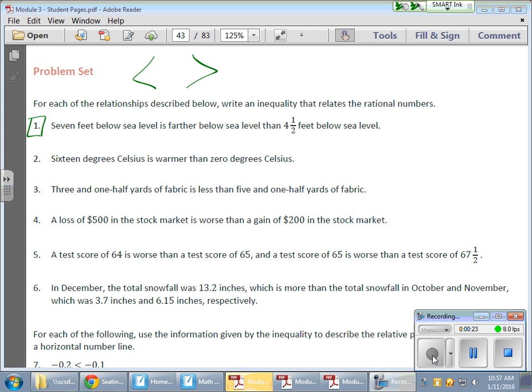For example, in the first guy here, we have seven feet below sea level. And seven feet below sea level is a negative value. That's negative seven is farther down below sea level than four and a half feet below sea level. Negative four and a half feet would then be, excuse me, four and a half feet below sea level would be negative four and one half.